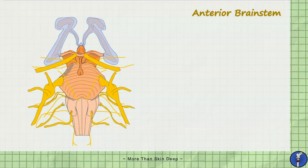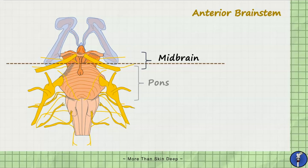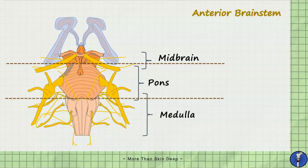The brainstem is a stalk-like projection which makes up the distal part of the brain. The brainstem is divided into three main regions: the midbrain, which is the smallest and most superior aspect of the brainstem measuring at around 2cm in length; the pons, which forms the most anterior aspect of the brainstem; and the medulla, which is the most narrow and distal part of the brainstem. The medulla oblongata then continues inferiorly to form the spinal cord.